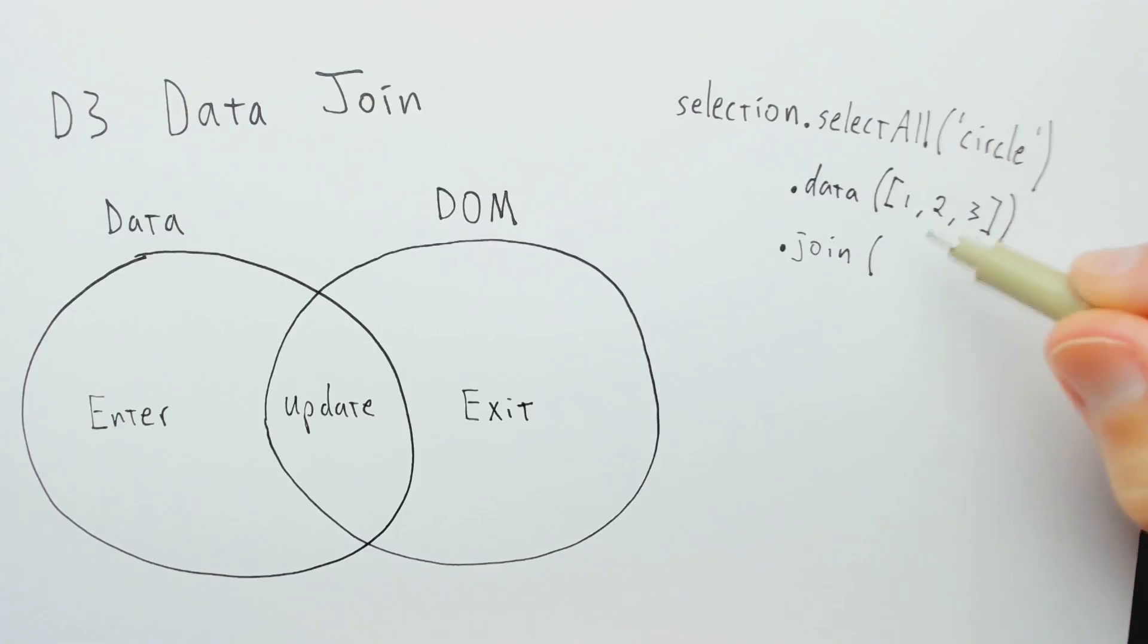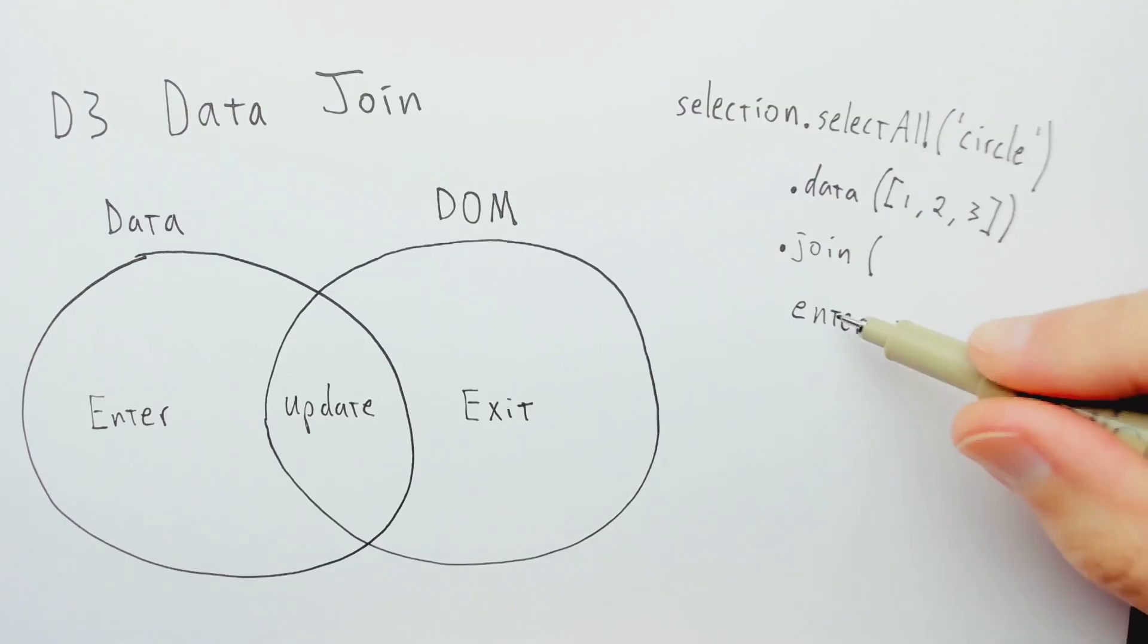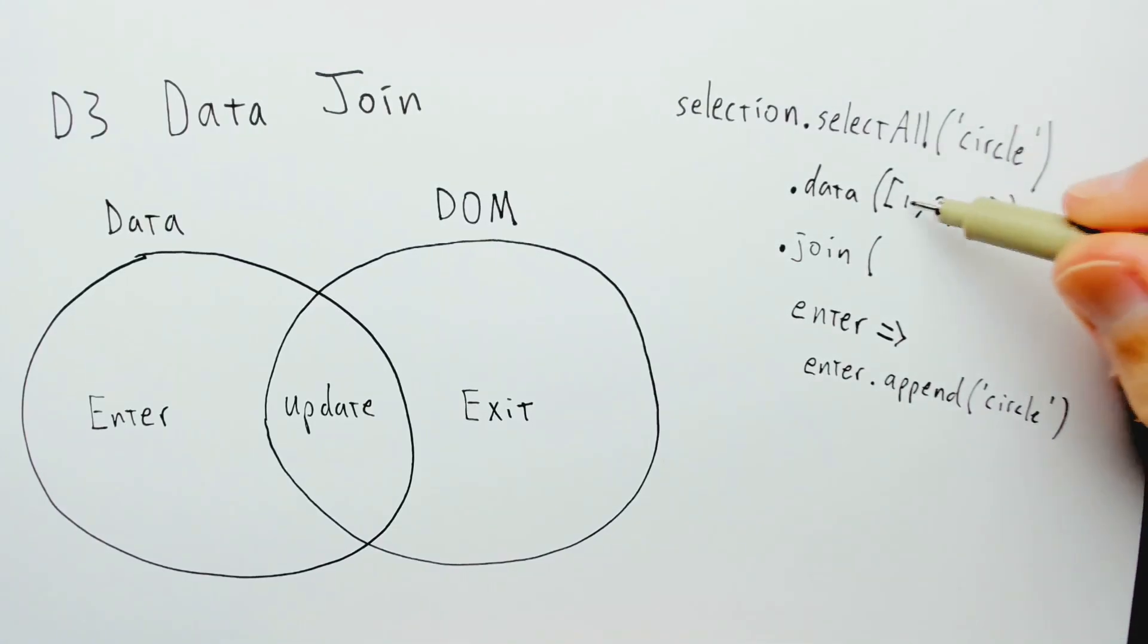Now, if we invoke .join passing the string circle, that's actually shorthand for the following. The first argument of .join is a function that takes as input the enter selection. And it should return a new selection containing newly appended elements. And in the case of circles, that looks like this, enter.append circle. This line will append a brand new circle element, in this case three times, corresponding to each of these elements of the data array.